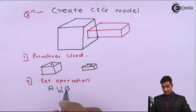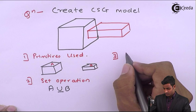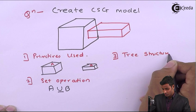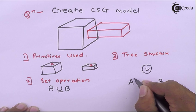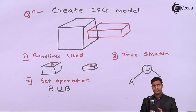Third is tree structure. On the basis of set operation, we develop a tree structure. Since two objects are there and the relation is union, the tree structure is A union B, depending on the set operation.